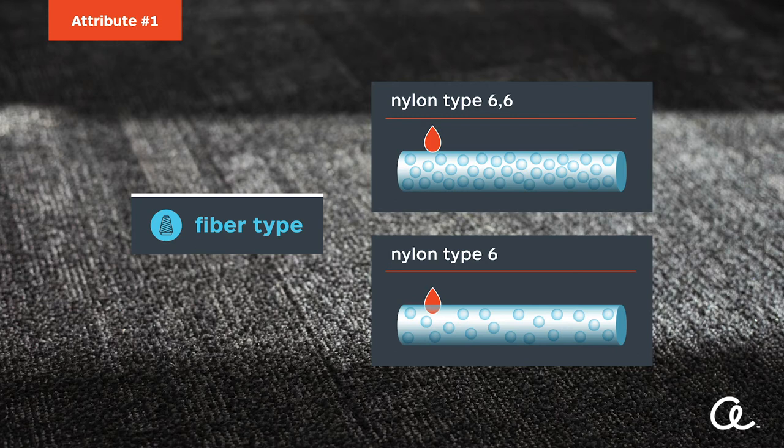The nylon type 6 has longer hydrogen bonds and a more open polymer chain alignment, leaving the structure more susceptible to staining. Type 6 is easier to dye, but if you are trying to prevent a spill from becoming a stain, that's not necessarily a benefit.